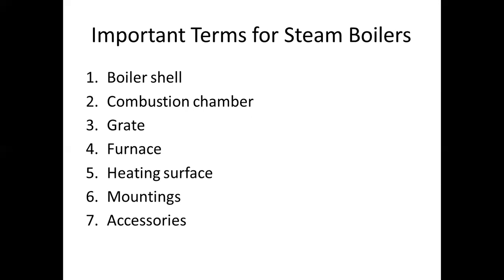Grate: It is a platform in the combustion chamber upon which fuel is burned. The grate generally consists of cast iron bars which are spaced apart so that air can pass through them. The surface area of the grate over which the fire takes place is called the grate surface.